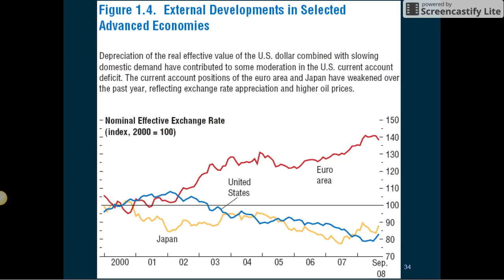Regarding external developments in selected advanced economies: depreciation of the real effective value of the U.S. dollar, combined with slowing domestic demand, has contributed to some moderation in the U.S. current account deficit. The current account positions of the Euro area and Japan have weakened over the past year, reflecting exchange rate appreciation and higher oil prices.